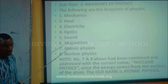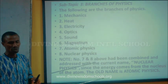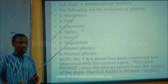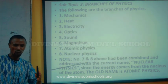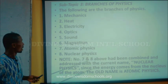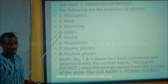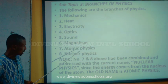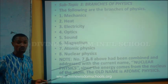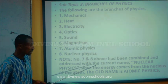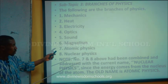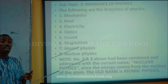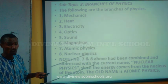Now we are going to the next aspect, which is the branches of physics. At the secondary level, physics is categorized into different areas. The first is mechanics, which is a branch of physics with other subtopics. Next is heat, then electricity, optics, sound, and magnetism. The last one is atomic physics and nuclear physics. These two have been combined and are addressed as nuclear physics, because the energy that comes from the nucleus of the atom is used to carry out different experiments. The old name was atomic physics; the modern name is nuclear physics because the reaction takes place in the nucleus of the atom.